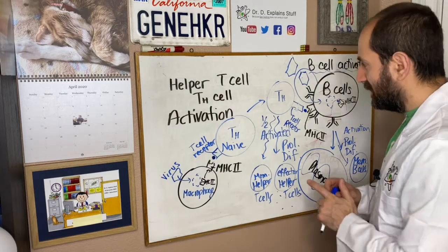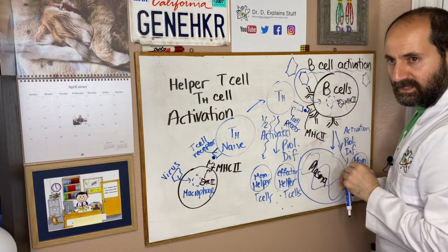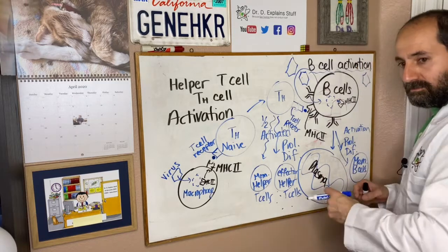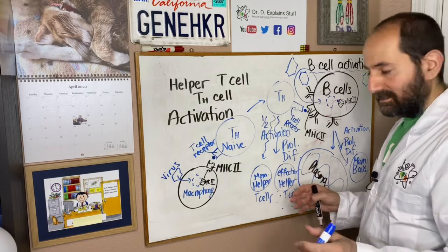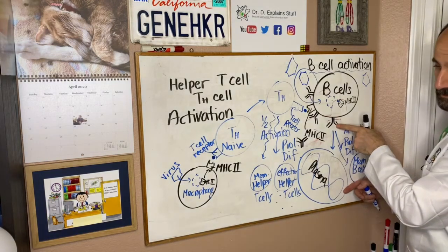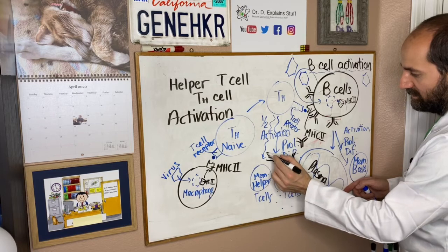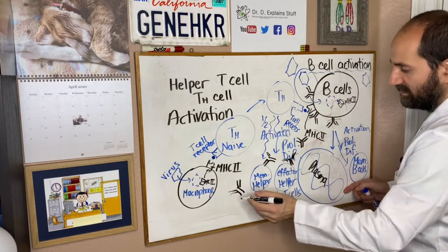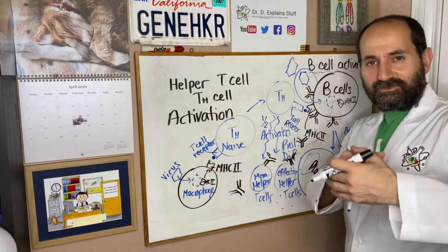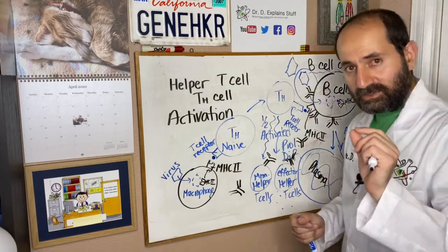What does the plasma cell do? Remember the antibodies on the surface of the B cells — the B cell receptors stuck to the surface? Well, the plasma cell now produces tens of thousands of those antibodies per minute and releases them into the bloodstream. So the antibodies that were on the surface of this B cell are now secreted into the bloodstream. It's like going to Lowe's, making a bunch of copies of your key, and making it rain — throwing a ton of your key out — because you know your key recognizes this virus.